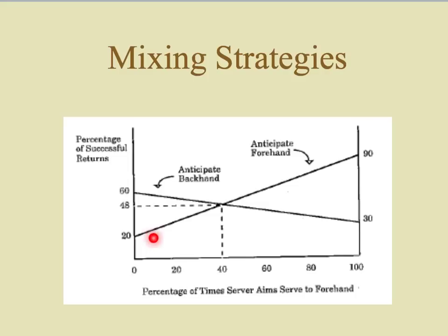This is basically a result from Von Neumann and Morgenstern. In zero-sum games, one player — in this case the server — is attempting to minimize the opponent's maximum, while the other player is trying to maximize the minimum of the payoff. This is known as the minimax theorem. The surprising point is that the maximum of the minimum — the receiver's response — is actually the exact same in terms of percentage of successful returns as the minimax strategy of the server. So we actually end up at the same equilibrium point.